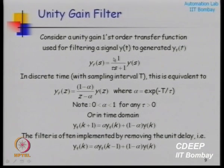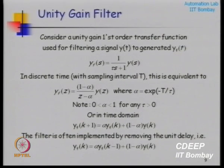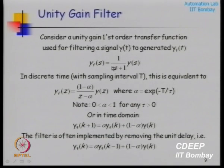The unit gain filter is simply, in the continuous domain, a signal filtered through a first-order filter of the form 1/(τs+1), or equivalently (1/(1+a)) in the numerator with (s+a) in the denominator. This is a unit gain filter — the gain of this filter is 1. Its task is only to knock off certain frequencies, and which frequencies are knocked off depends on how you choose τ.